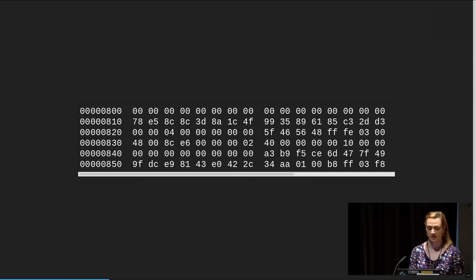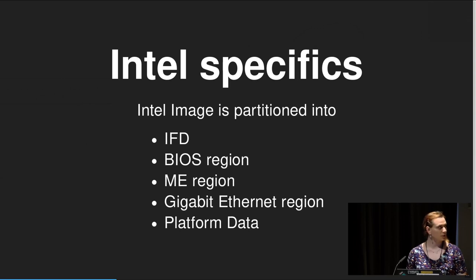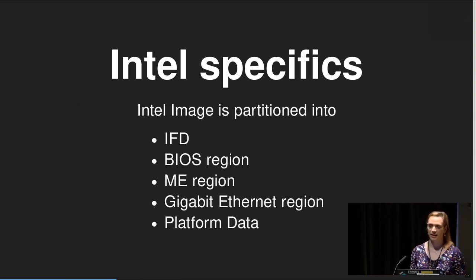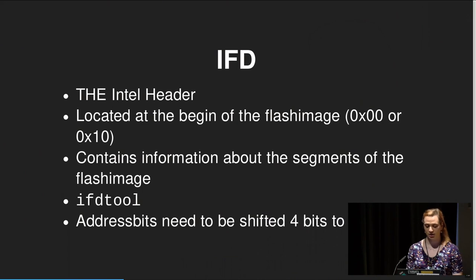We talked about CPUs and how they are initialized, but before you get control of your CPU, Intel and your vendor have already started like five other CPUs and five other code paths. So let's talk about the Intel specifics found in a modern firmware image. An Intel image is partitioned into the Intel Flash Descriptor (IFD), the BIOS region, the Management Engine region, Gigabit Ethernet, platform data, and in newer images you will also find embedded controller images.